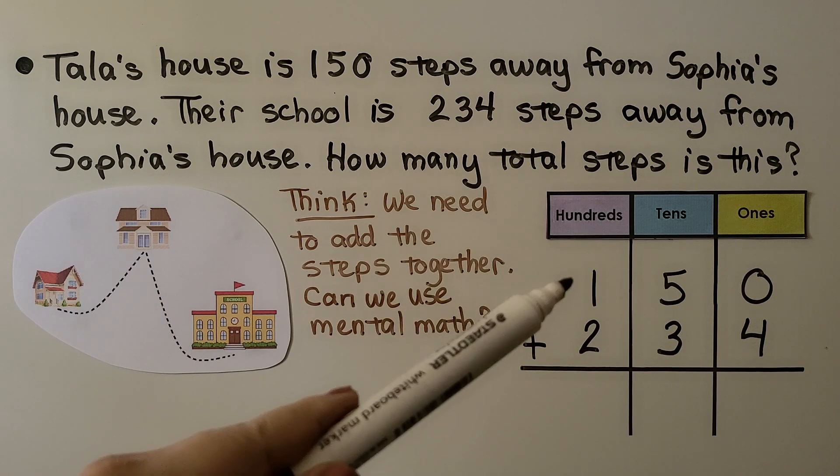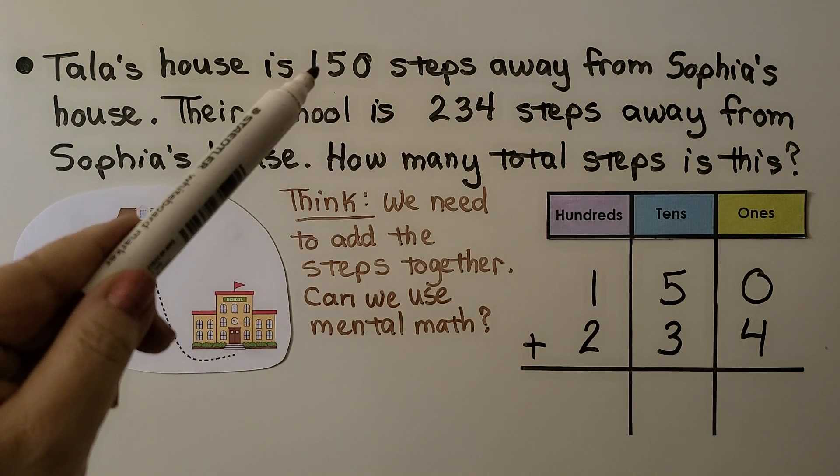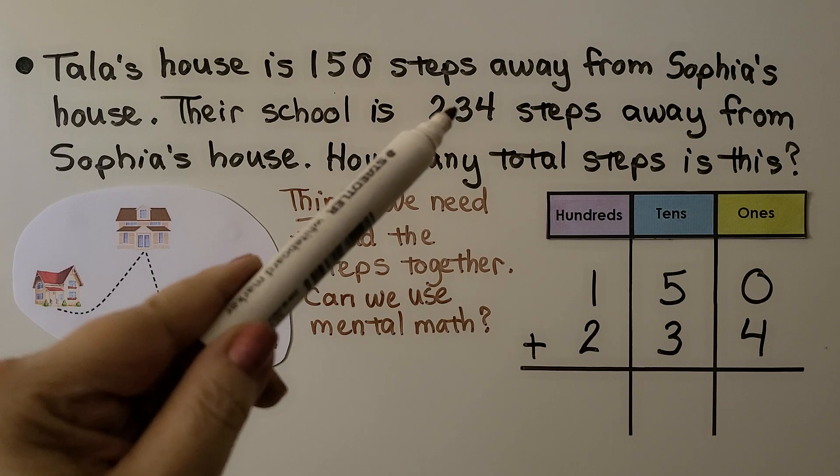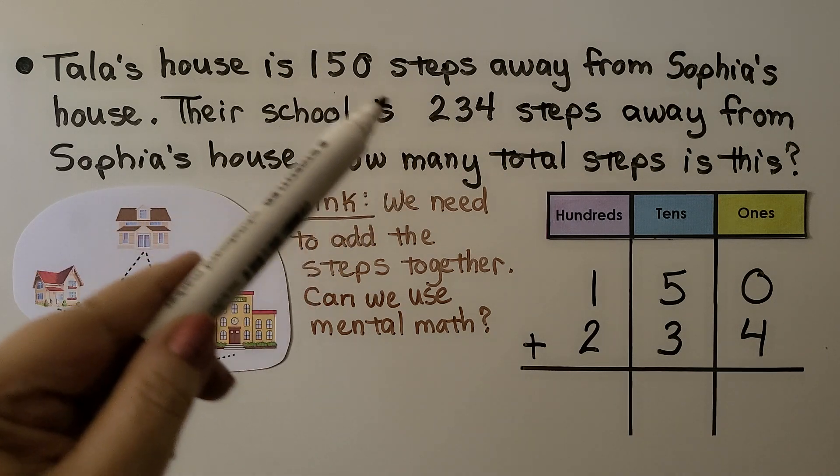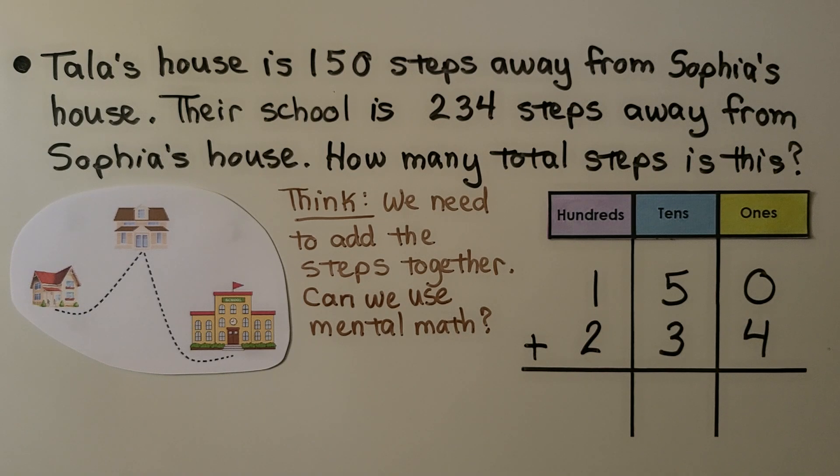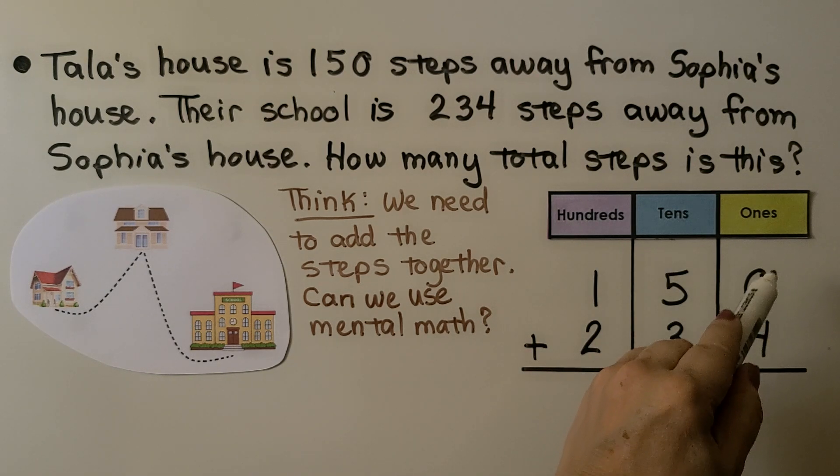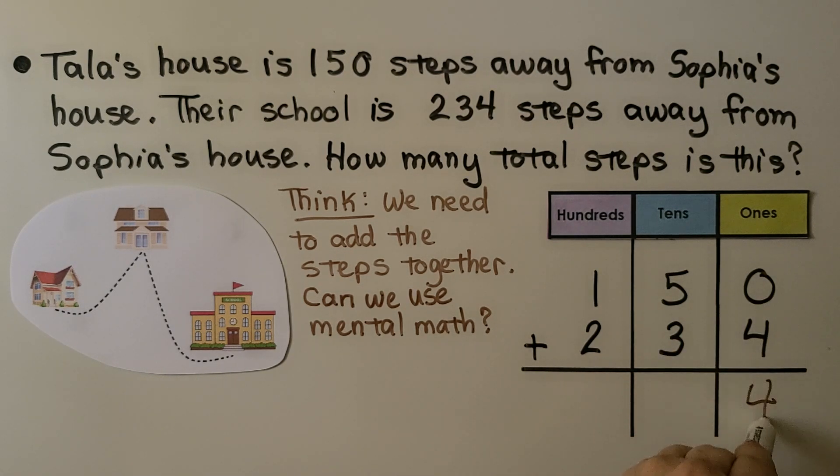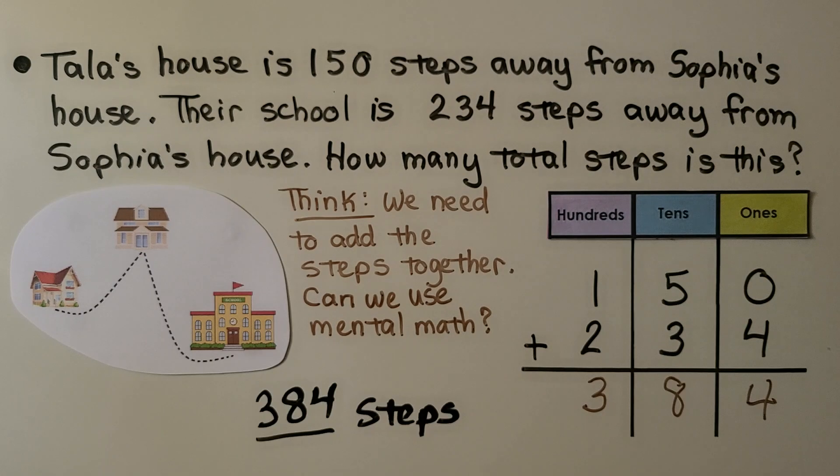We have 200 and 100 more is 300. Then we have five tens and three tens. That's eight tens. And then we just have four ones. We could also add it by going 0 plus 4 is 4, 5 plus 3 is 8, and 1 plus 2 is 3. That's 384. It's 384 steps.